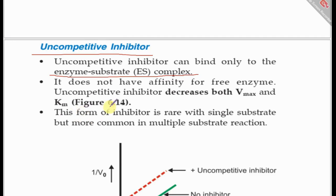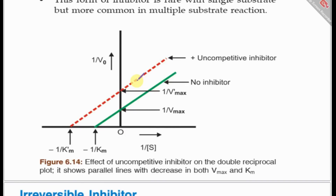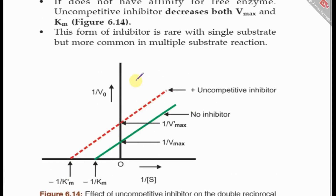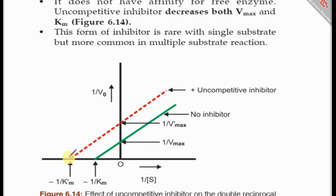This form of inhibition occurs in enzymes that act on more than one substrate. On the Lineweaver-Burk graph, the uncompetitive inhibitor shifts both the Vmax (decreased) and the KM (also decreased, shifting left to more negative values), which is distinct from the other types of inhibition.